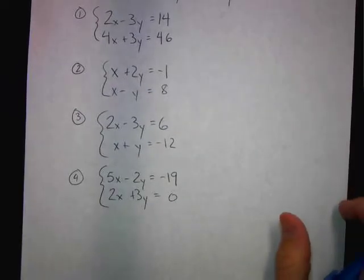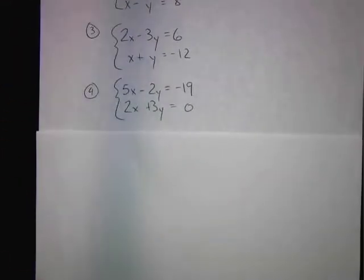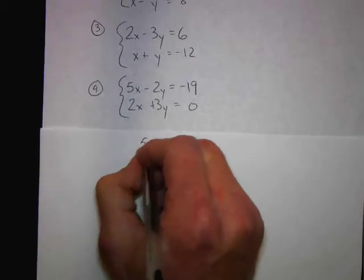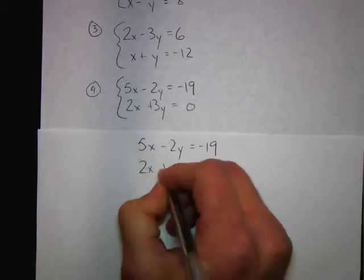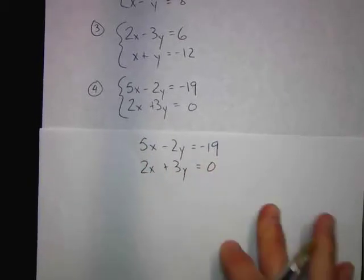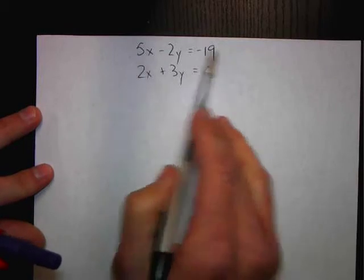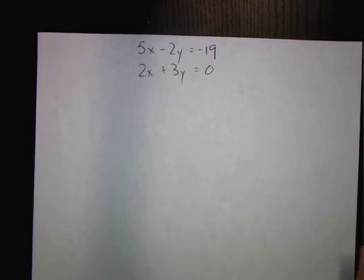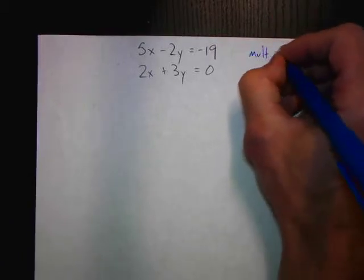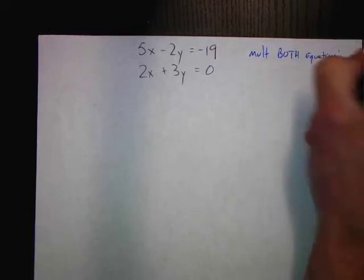Now on to the most challenging one — number 4. What can we do with that system? We're going to think of a way to manipulate it. If we multiply just the top equation, nothing cancels. If we multiply just the bottom equation, nothing cancels. So it looks like what we're going to have to do is multiply both equations, and then cancel something out.